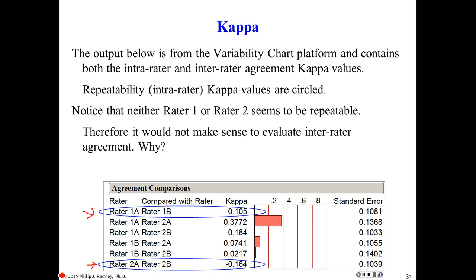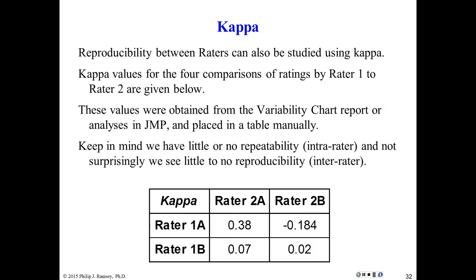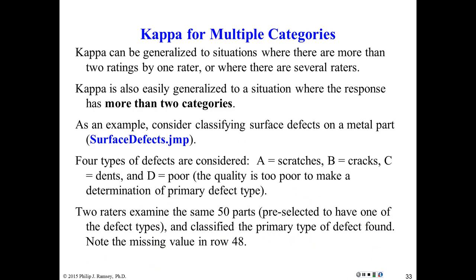At this point, I would stop. Notice there was one case, rater one versus rater two, where the kappa got up to almost 0.4. But given the two raters can't agree with each other, that's obviously just a random occurrence. In other words, there's no real evidence of agreement. So at this point, we would conclude that neither of the raters has the ability to reproduce their results. In other words, they can't repeat their results. So let's go take a look at JMP, and then I'll show you one more case study.